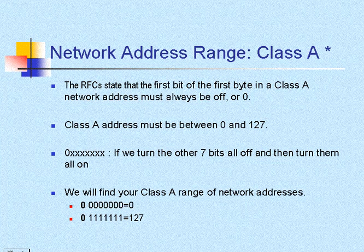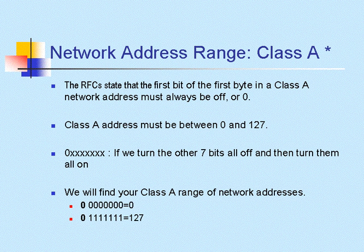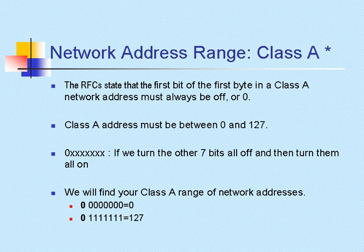In our last video, we took a look at network addressing, and we talked about terminology and what portions of the network address made up the network portion and the host portion. Now we're going to dive into this a little bit deeper, and we're going to see how we came up with this range for a Class A, Class B, and Class C, and how we determined the number of total possible networks and hosts for each one of these types of networks.